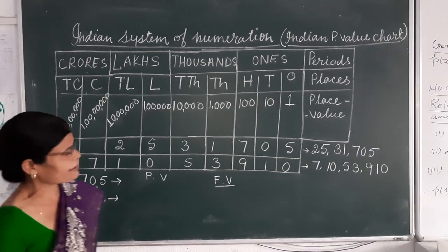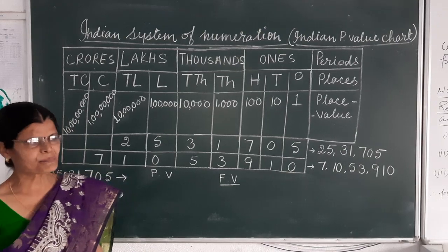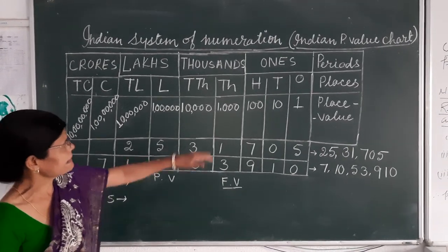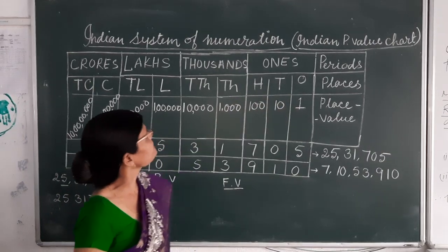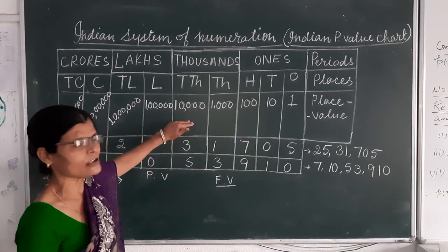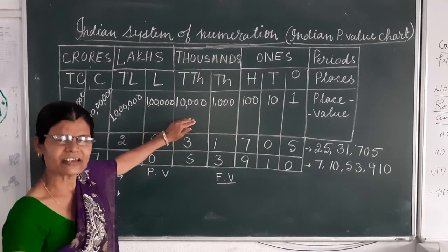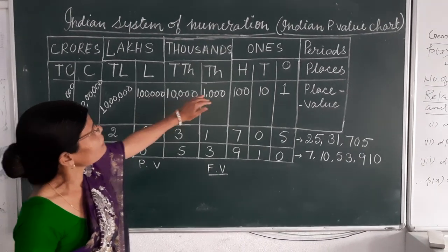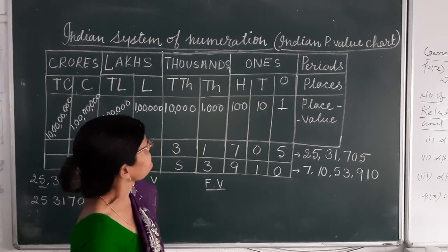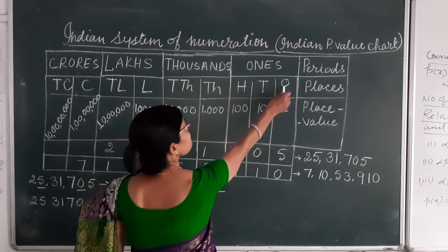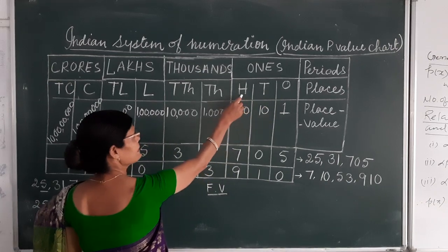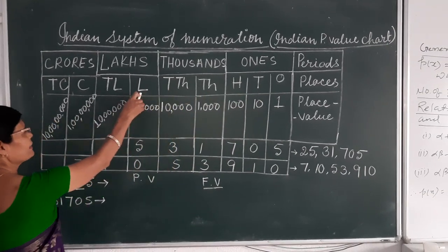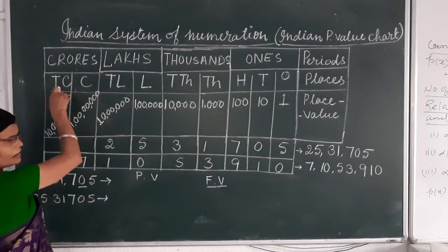This is a very important topic. The Indian Place Value Chart helps us to find out the place value of each and every digit in a number. Now see the placement: Ones, Tens, Hundreds, Thousands, Ten Thousands, Lakhs, Ten Lakhs, Crores, Ten Crores.